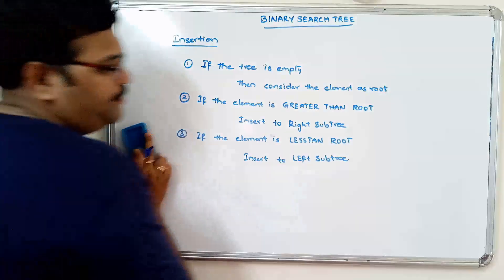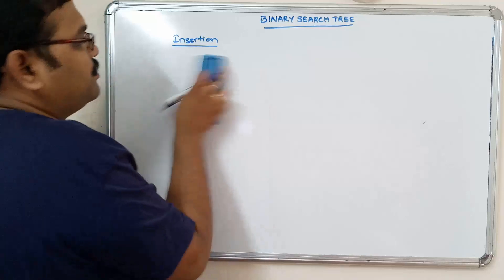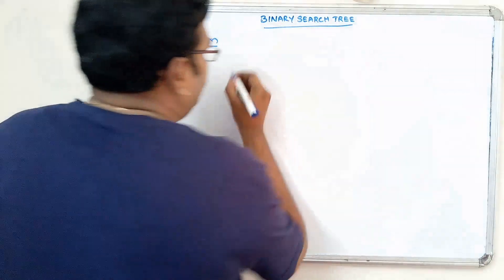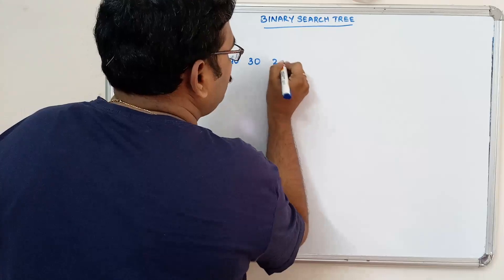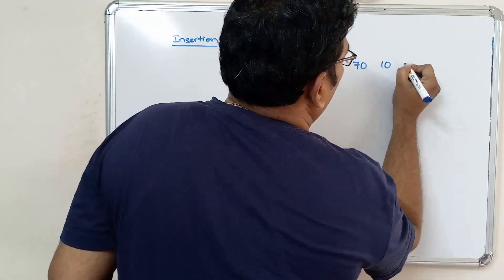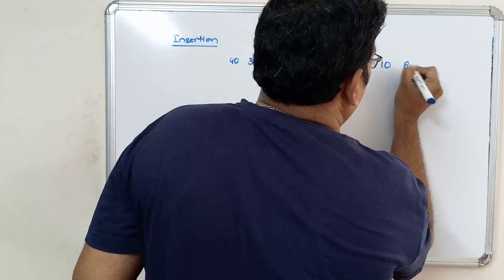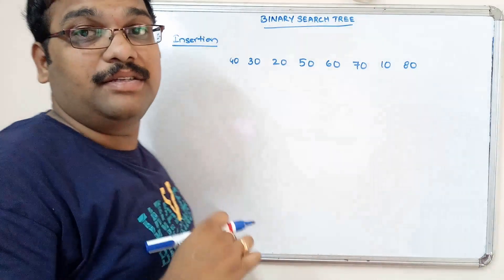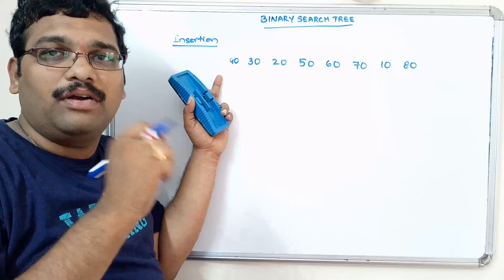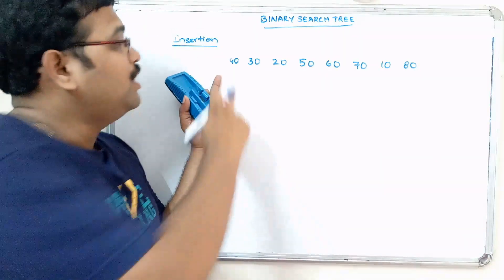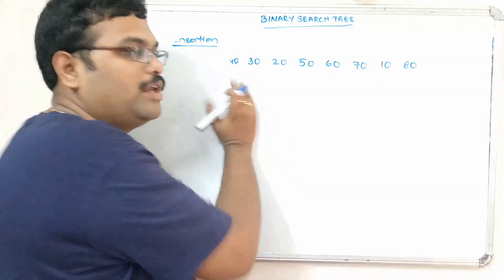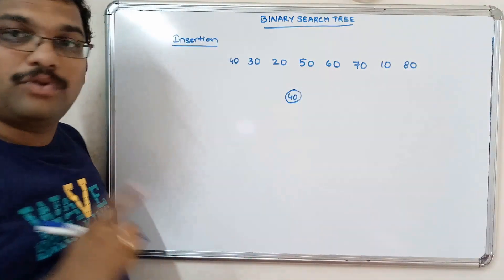We will go with an example so that it will be understood. We will take elements and construct a binary search tree. Now read the first element. The first step: check whether the tree is empty. If it is empty, consider the element as a root node. So taking 40 — there is no tree, so tree is empty. 40 will be considered as root node.